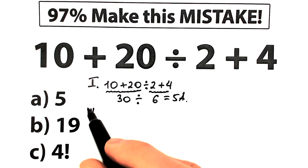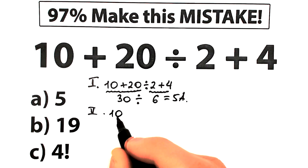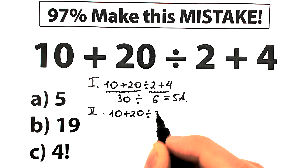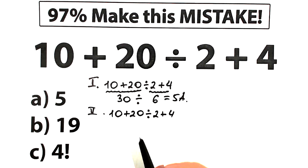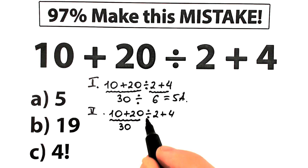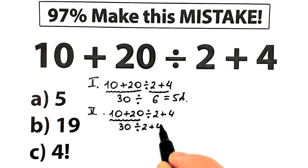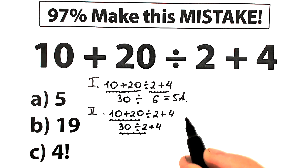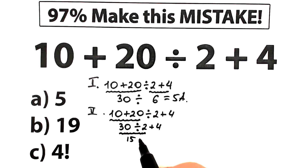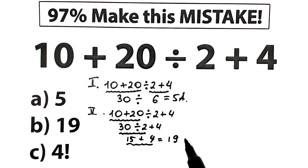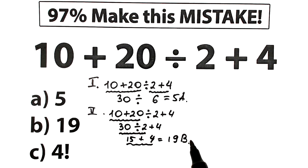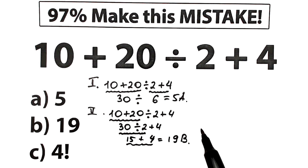Another type of student solves this question differently. We have 10 plus 20 divided by 2, plus 4. They go from left to right: 10 plus 20 equals 30, then 30 divided by 2 equals 15, then 15 plus 4 equals 19. This looks like the correct answer is B, but these students also don't know about order of operations. In math, we must know the correct order to solve this problem.